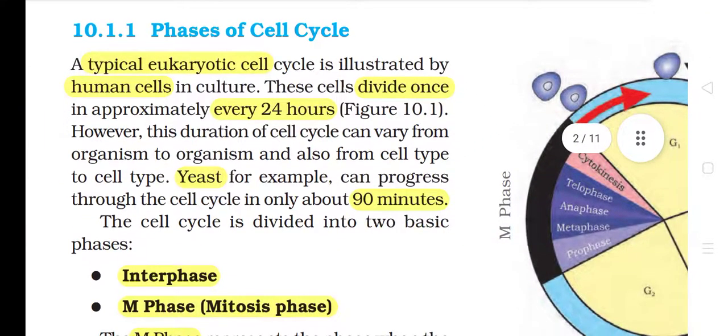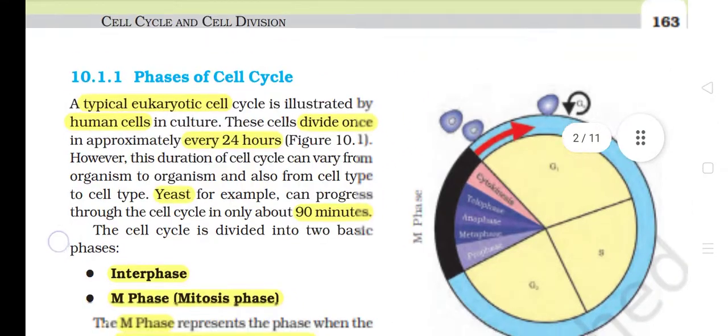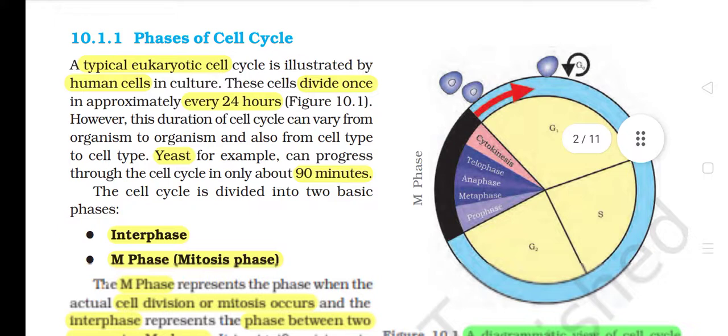10.1.1 Phases of Cell Cycle. A typical eukaryotic cell is illustrated by human cells in culture. These cells divide once in approximately every 24 hours. However, this duration of cell cycle can vary from organism to organism and also from cell type to cell type. Yeast, for example, can progress through the cell cycle in only about 90 minutes.